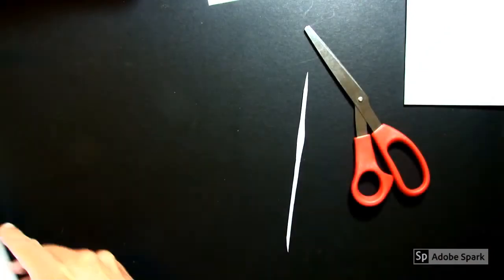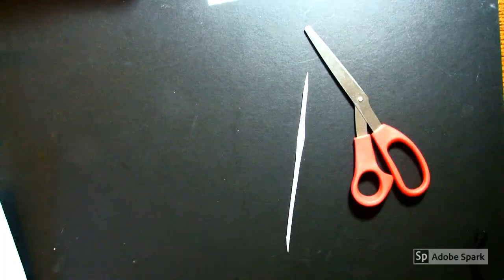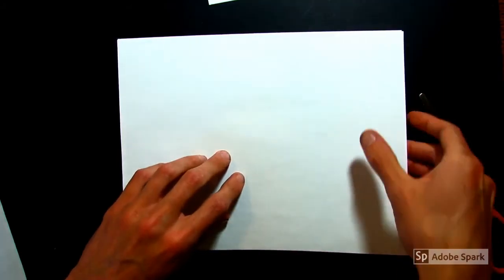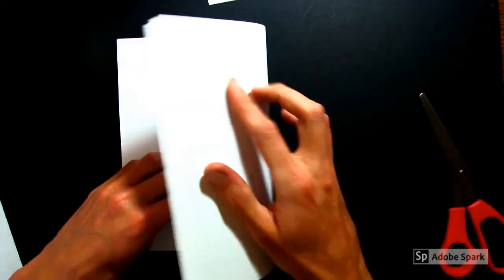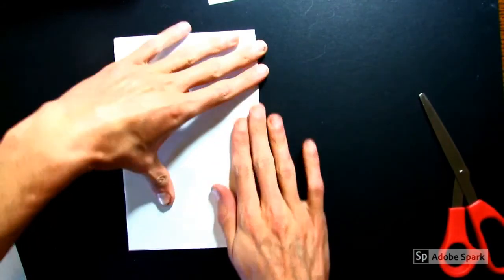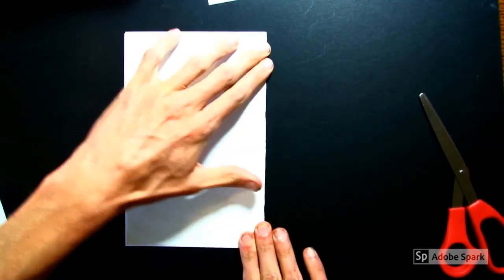Take your other two pieces of paper, stack them together, and this time, fold them in half. Just the same way, except we have two pieces of paper stacked on top of each other.